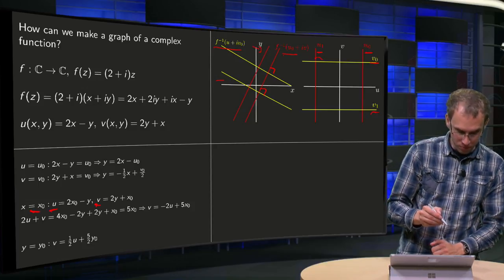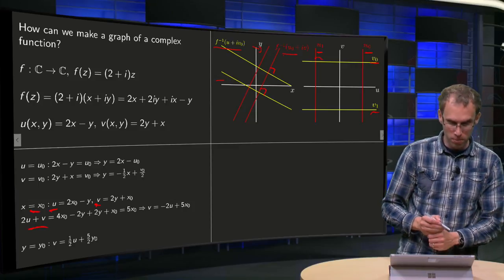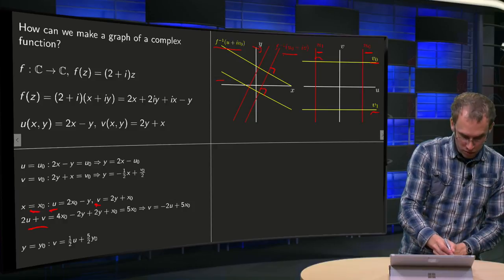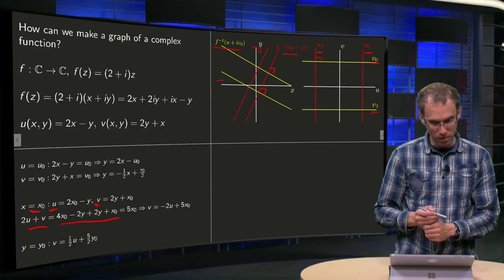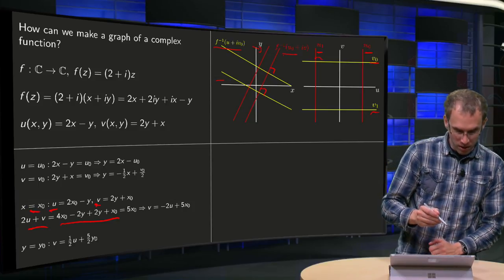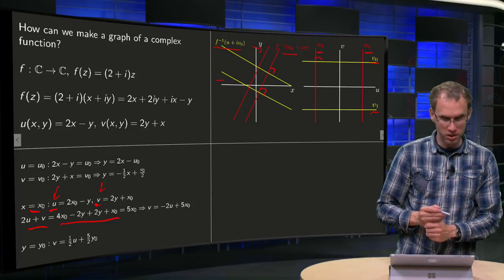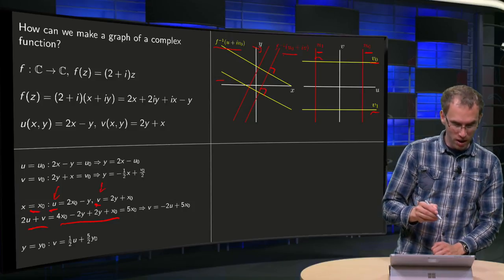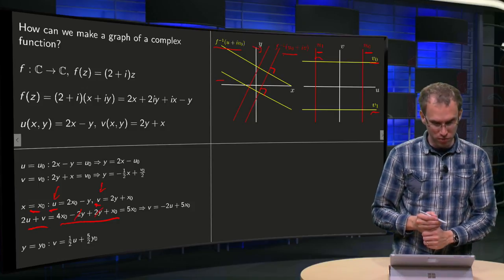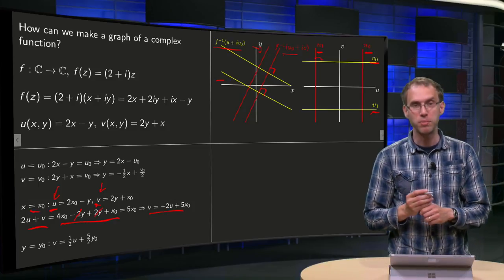So what can you do? You can solve for example 2u plus v equals 4 times x₀ minus 2y plus 2y plus x₀, so you do 2 times u and you add v, because in that way you eliminate the y's, those cancel out, you get 2u plus v equals 5x₀.